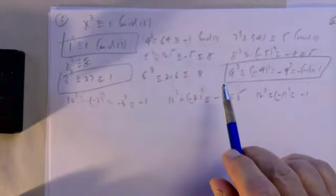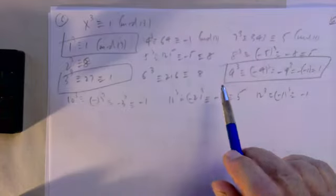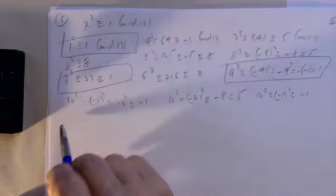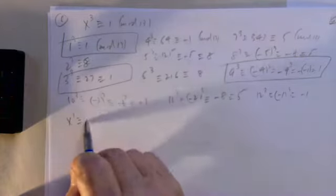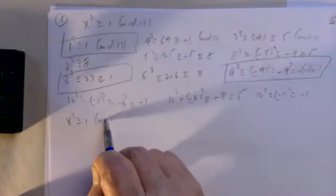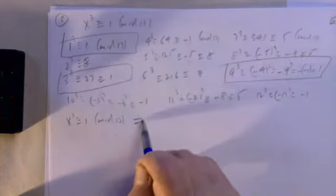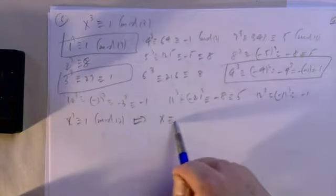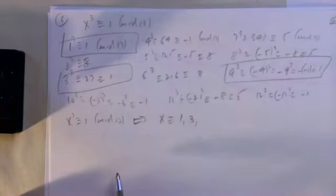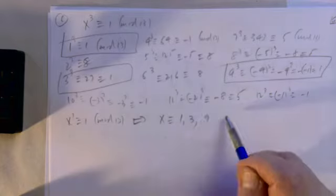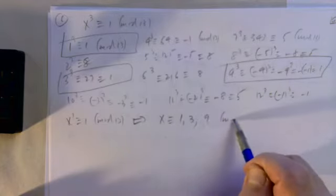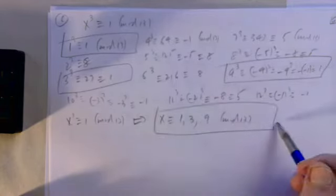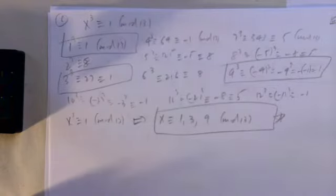The numbers whose cubes are congruent to 1 mod 13 are 1, 3, and 9. So x³≡1 mod 13 if and only if x≡1, 3, or 9 mod 13.